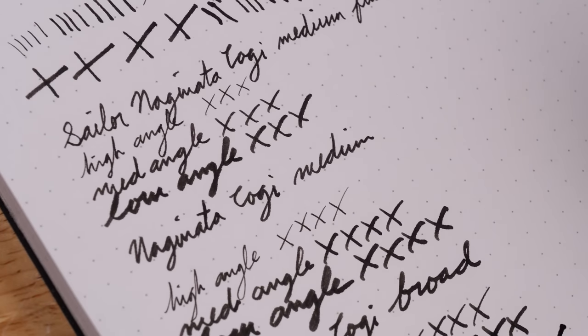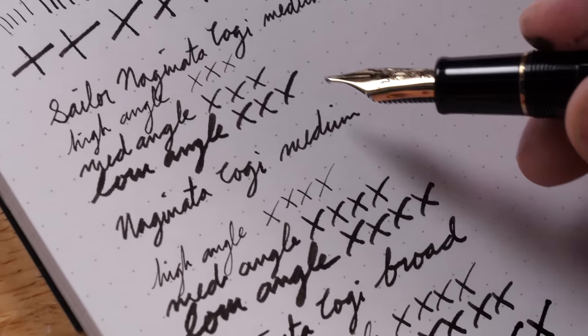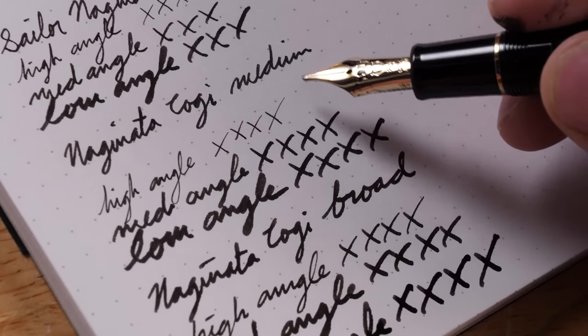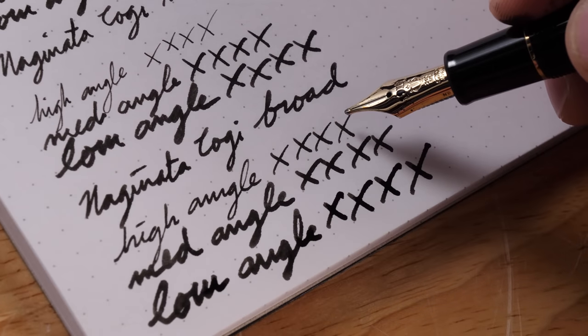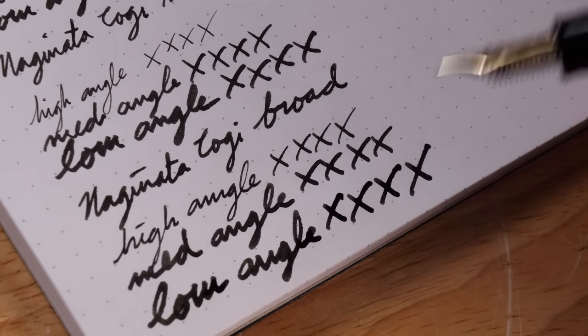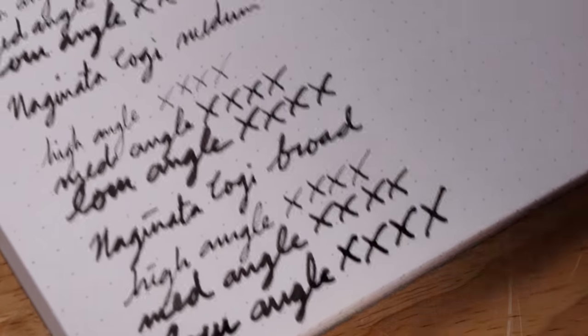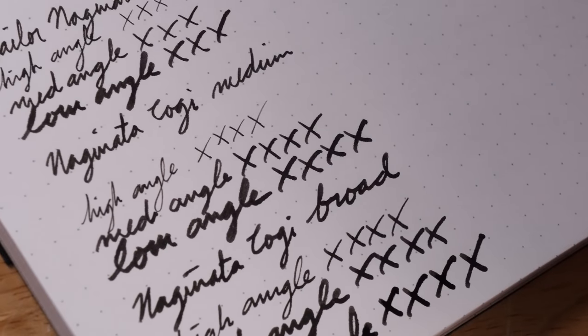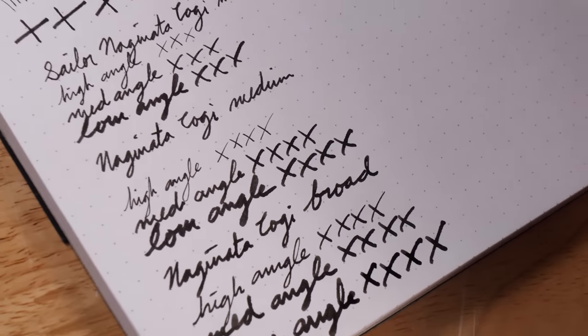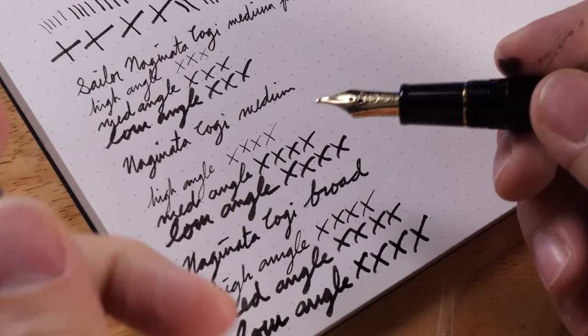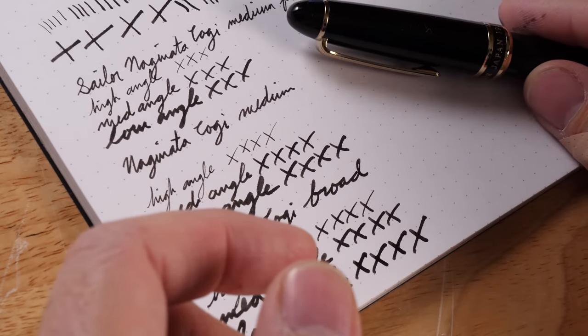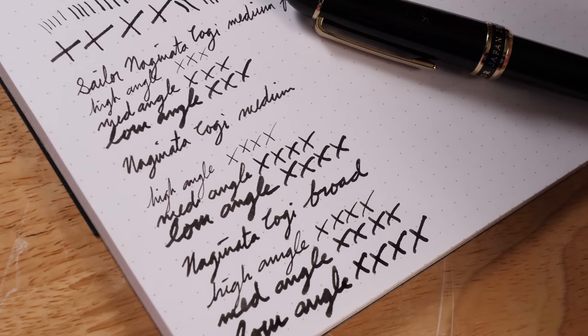There's your difference between your medium fine, high, medium, low angle, medium, high, medium, low angle and broad, high, medium, low angle. The broad feels the smoothest. Definitely has the best writing feel, in my opinion. All the nibs are extremely pleasant to write with, but there you go. That is the Naginata togi.